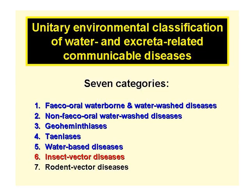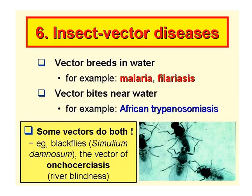We're now going to look at Category 6 of our environmental classification of water and excreta related diseases. Category 6 comprises the insect vector diseases. Vectors can breed in water, for example those which transmit malaria or filariasis, or they can bite preferentially near water, for example African trypanosomiasis or sleeping sickness.